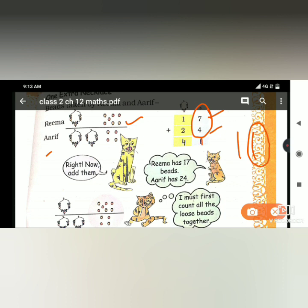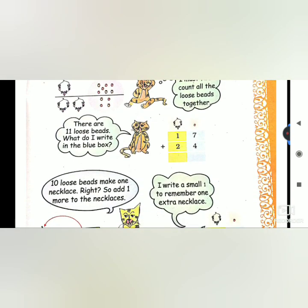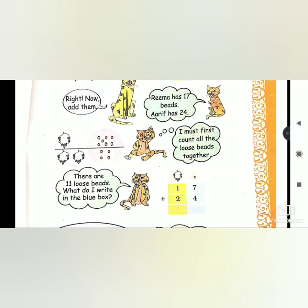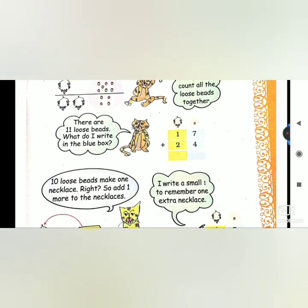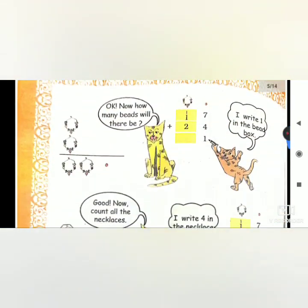This number will be on top. 2 plus 1 is 3, and 3 plus 1 is 4, so answer is 41. Or if 7 plus 4 is 11, this number will be here and this on top, 2 plus 1 plus 1 is 4. You can do it as 17 plus 24.